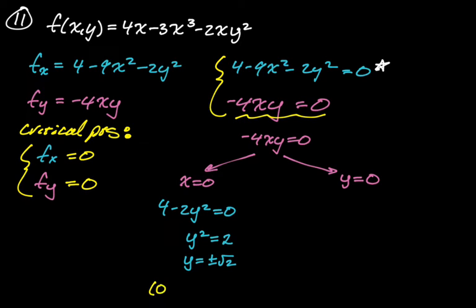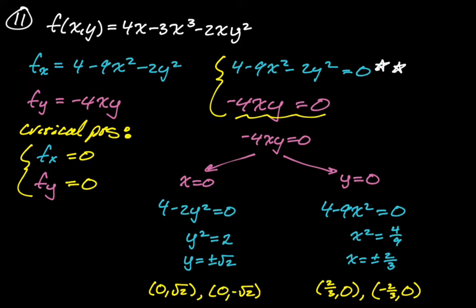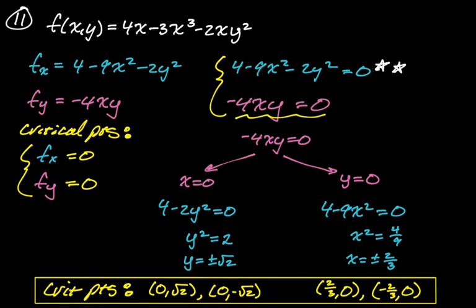If y = 0, we plug back into the first equation: 4 - 9x² = 0, so x² = 4/9, meaning x = ±2/3. That gives two more ordered pairs: (2/3, 0) and (-2/3, 0). So overall our four critical points are (0, √2), (0, -√2), (2/3, 0), and (-2/3, 0).